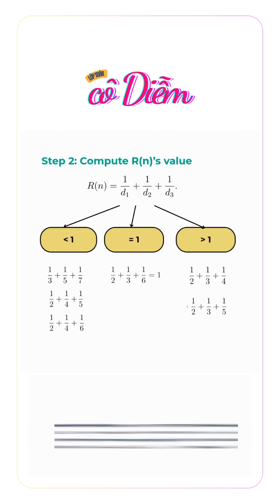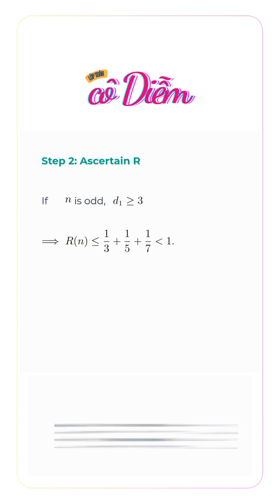Consider all cases where R(n) ≥ 1. If n is odd, then d_1 ≥ 3. So R(n) ≤ 1/3 + 1/5 + 1/7 < 1.